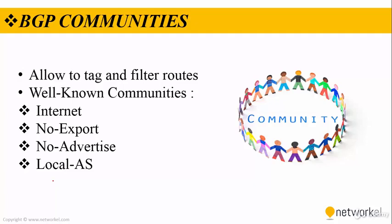Let's talk about the BGP Community feature. The BGP Community feature allows routers to tag routes and filter them using those labels. In this respect, routes act like a community rather than a single route. The community feature is an optional and transitive feature. If a router does not understand the concept of community, it passes these attributes to the next router.